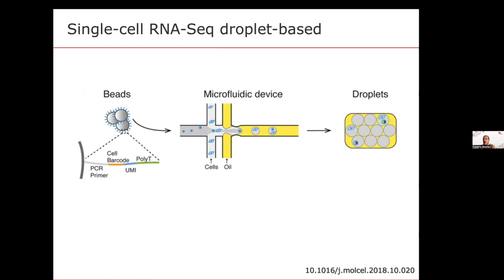Sometimes you have errors: droplets that are totally empty, or just with a bead but no cell, or with a cell but no beads. Or you can have multiple cells in one droplet, which complicates the sequencing. That's how the base technology works.